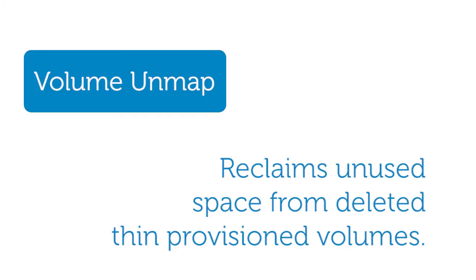Volume Unmap helps recover new space previously allocated to thin provision volumes. As a host writes data to a thin provision volume, the array allocates additional space for that data. With Volume Unmap, when a host connected to a volume issues the delete request, the array deletes the data and deallocates the space, making it available for allocation by other volumes.